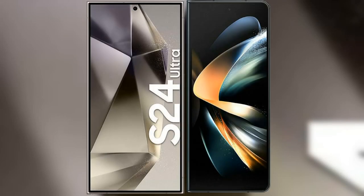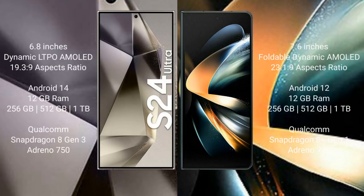I will compare the new Samsung Galaxy S24 Ultra with Samsung Galaxy Z Fold 4. The Samsung Galaxy S24 Ultra comes with a 6.8-inch Dynamic LTPO AMOLED display and aspect ratio 19.3:9. The Samsung Galaxy Z Fold 4 comes with a 7.6-inch foldable Dynamic AMOLED display and aspect ratio 23.1:9.